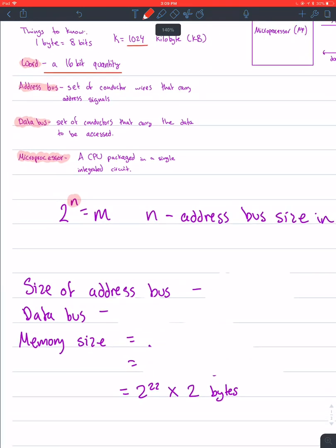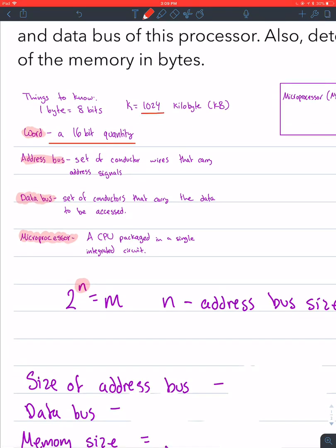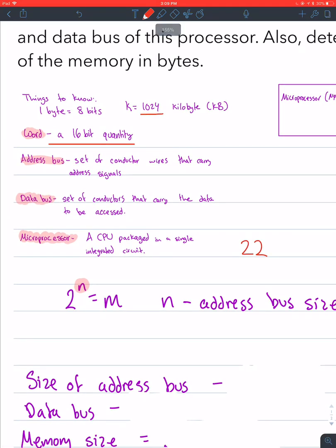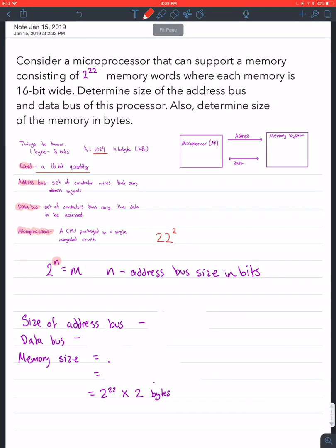They gave us in the question 2^22 - that's key to solving this. What does this mean? 2^n - anything like that is going to be our address bus size in bits. So we already solved the first part where it says determine the size of the address bus. The address bus is going to be 22 bits.